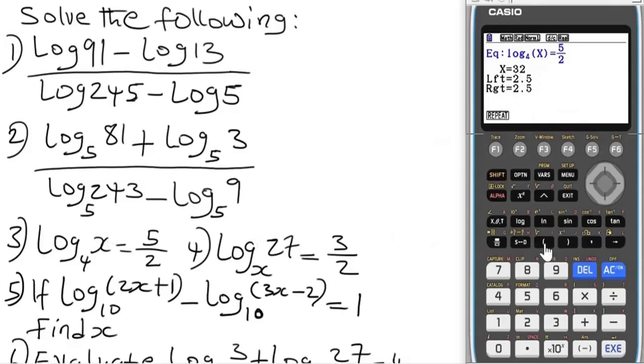Question four: delete everything, press option, math F4. The base now is x, and here we have it to be 27 equals 3 over 2. Press equals, assign x to be zero, and the answer is 9.